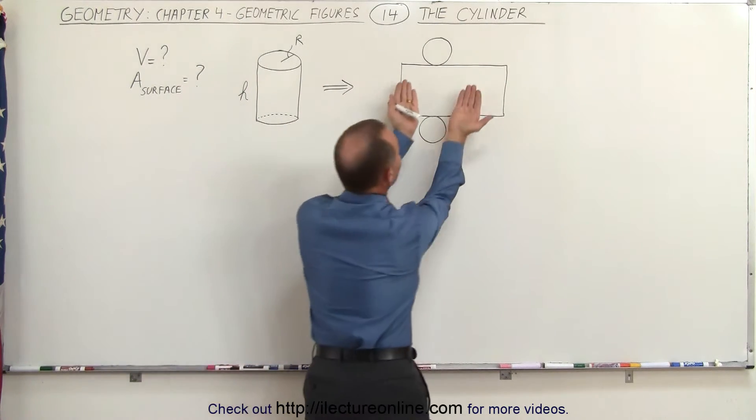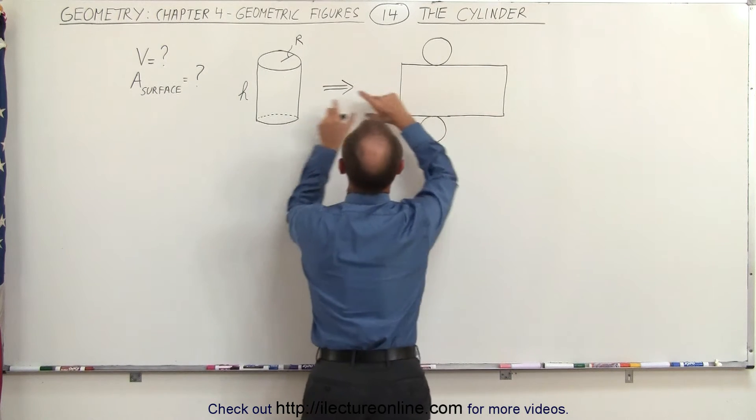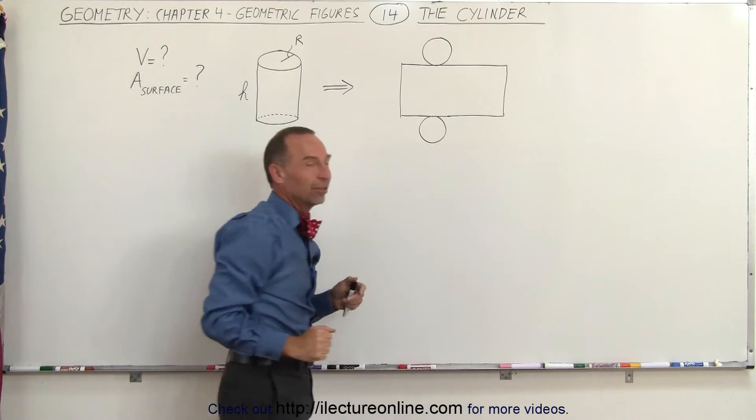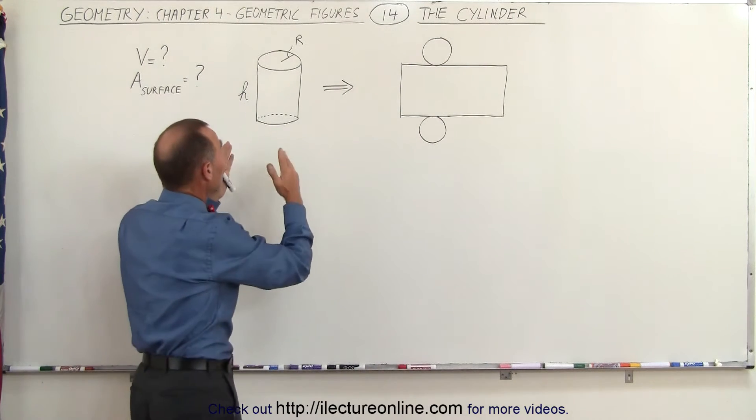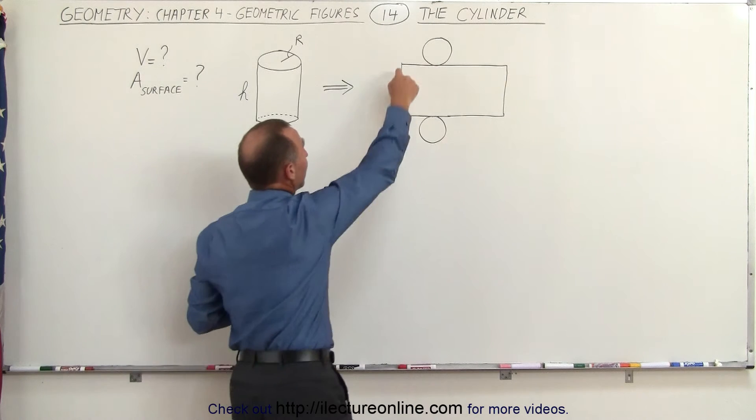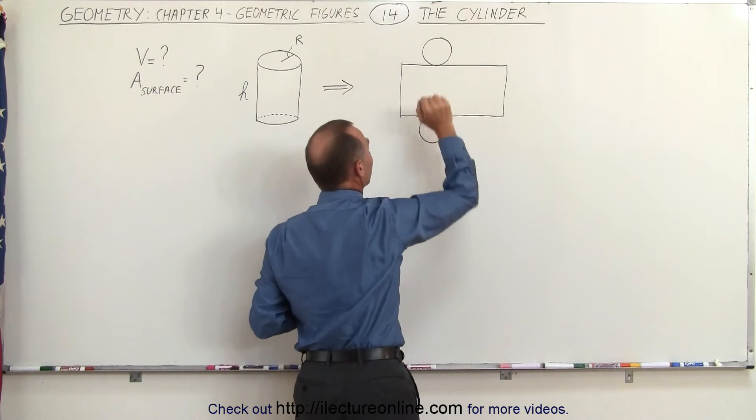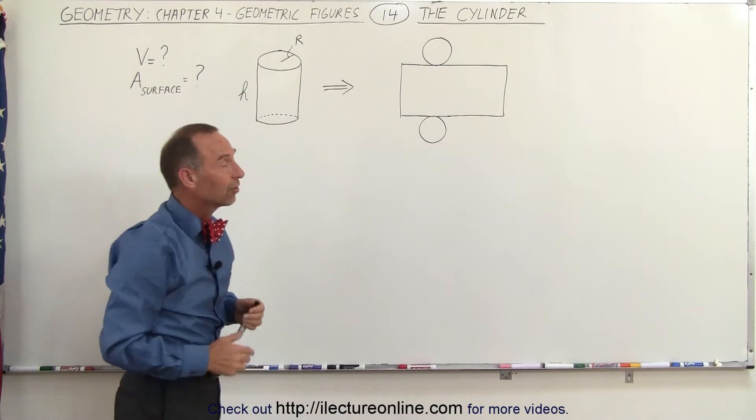And conversely, if you then take it and you roll it up, you can see that you have the side portion of the cylinder. This would be the top and this would be the bottom of the cylinder. So basically, a cylinder is constructed out of a rectangular sheet with two circles attached to it representing the top and the bottom of the cylinder.